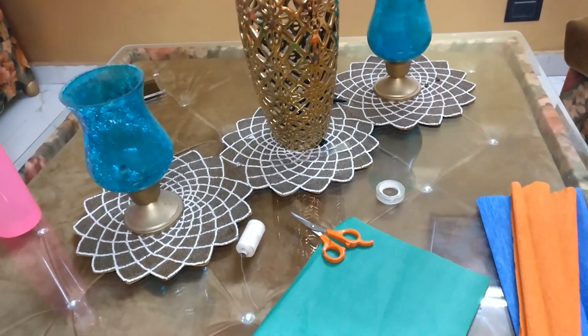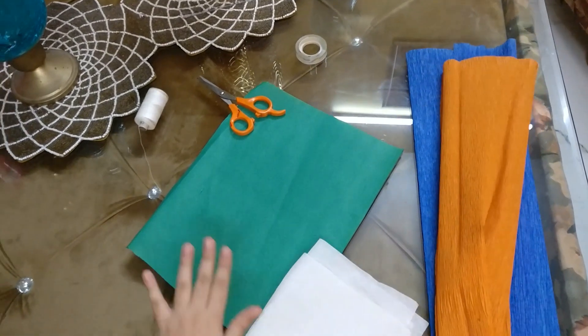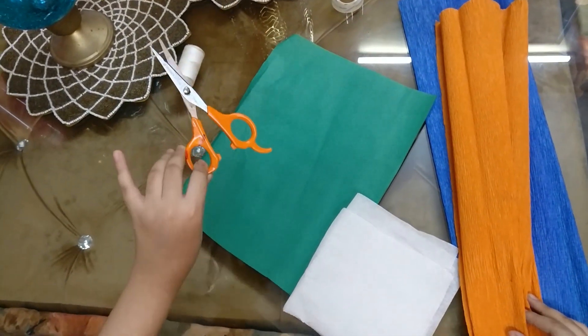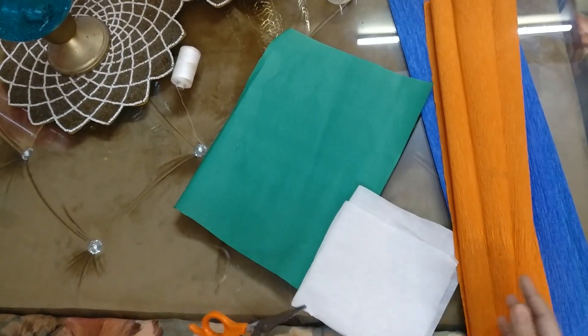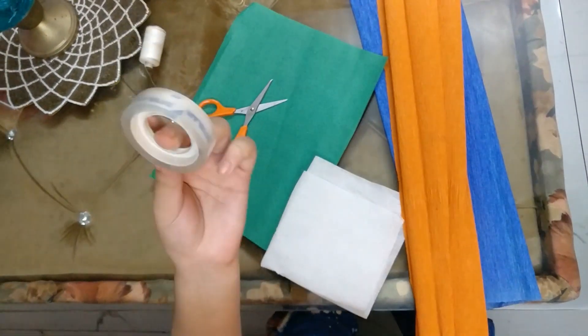So let's get started. We are going to need scrap paper or tissue paper, a green sheet, thread, and a pair of scissors. While using scissors, be careful and keep a parent near you. And some tape or glue.